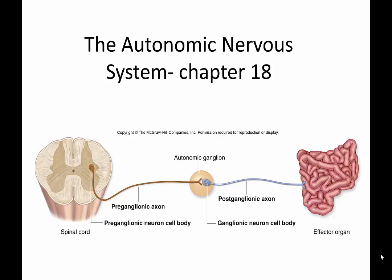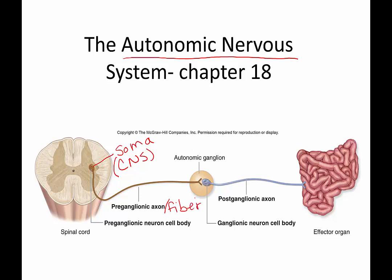The first thing to note when talking about the autonomic nervous system is that we're going to be dealing with a preganglionic and a postganglionic neuron. The preganglionic neuron soma will always be in the CNS — always. The preganglionic axon is also called the fiber. The second neuron soma, because we're dealing with a two-neuron chain, will always be in the PNS — always.